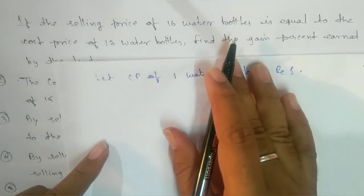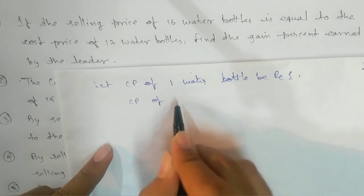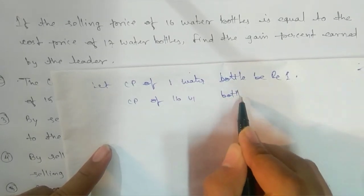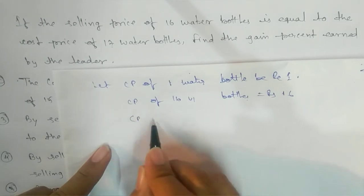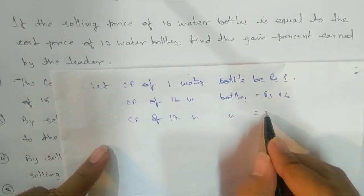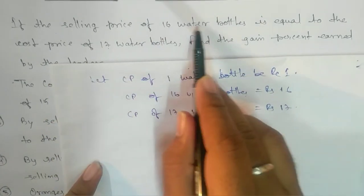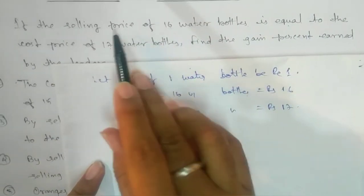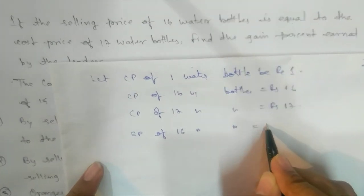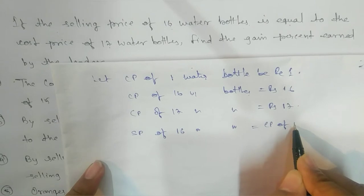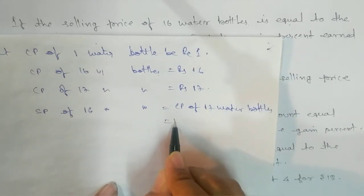If the CP of one water bottle is ₹1, then CP of 16 water bottles = ₹16, and CP of 17 water bottles = ₹17. Now, the selling price of 16 water bottles equals the CP of 17 water bottles, so SP of 16 water bottles = ₹17.